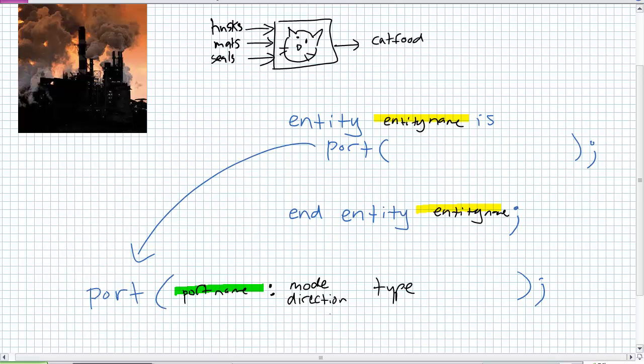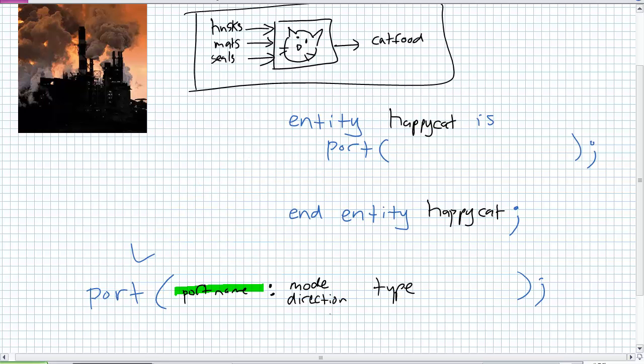Let's just do an example. This is the easiest way to do it. We've got the happy cat cat food factory. Its inputs are husks, mats, and seals. And its output is cat food. We're going to go ahead. Entity happy cat, which hopefully is not a keyword or a reserved word. I don't think it is. Entity happy cat is, end entity happy cat. It's describing this thing right there. What are its ins?